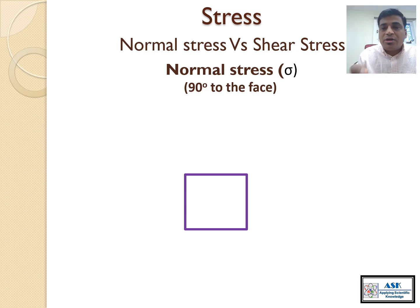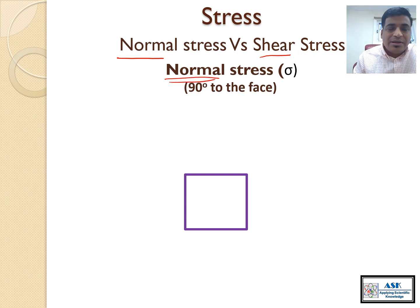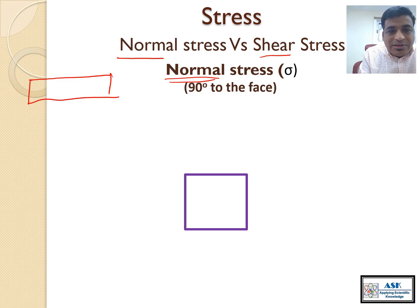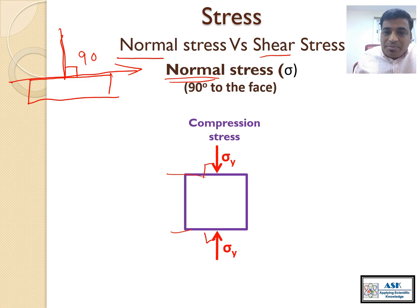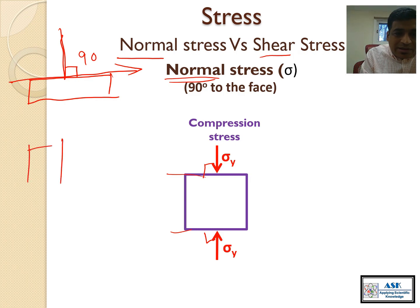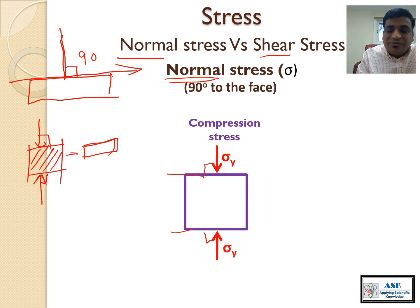Now let's understand normal stress and shear stress. With normal stress, the force is applied perpendicular — at 90 degrees — to the face of the plane. One example is compression stress. Think about tablet compression: you have a powder bed and you apply force from the top and bottom, compressing the powder. That force is perpendicular to the plane, which is why it is called compression stress.